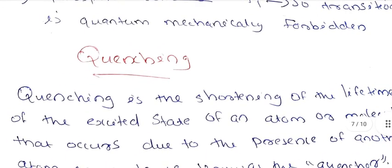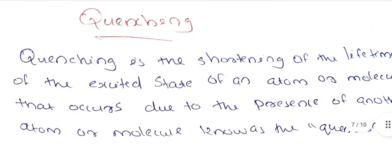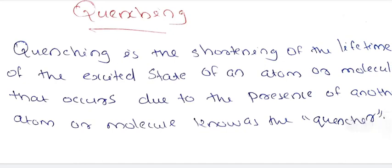Quenching is the shortening of the lifetime of the excited state of an atom or molecule that occurs due to the presence of another atom or molecule. The excited atom is de-excited because it is attacked by other atoms or molecules.